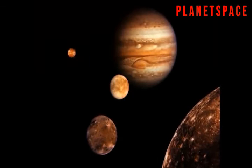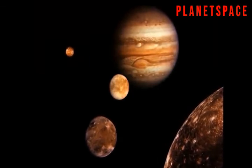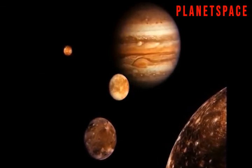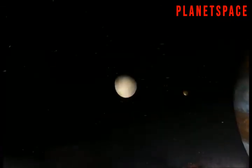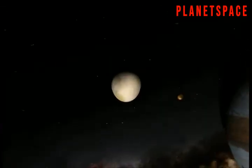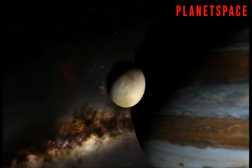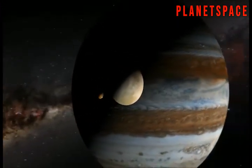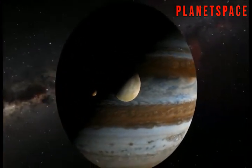Jupiter has at least 67 moons that circle around it. But 55 of them are very small, only about as big as a mountain or smaller. Some of its moons are very large, and at least two of them are about the same size as the planet Mercury.